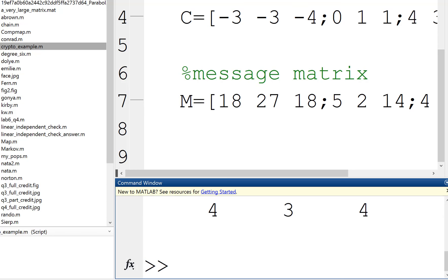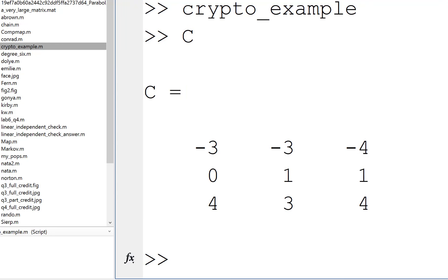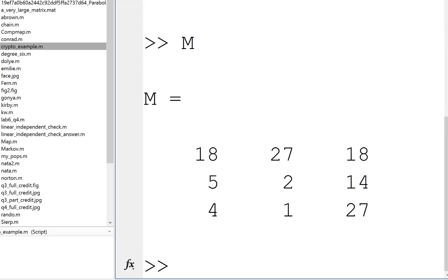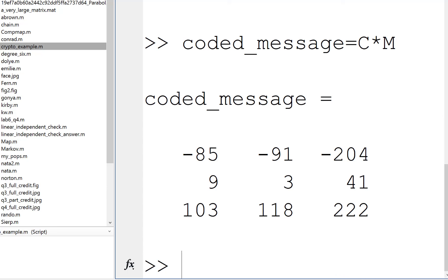So we've got matrix C, we've got matrix M, so those are already typed in, and now we send out the coded message. I'll call it coded message, it's going to be C times M. So that's what gets sent across, and the spy can't figure out what we're writing about.